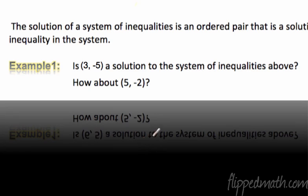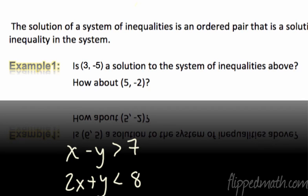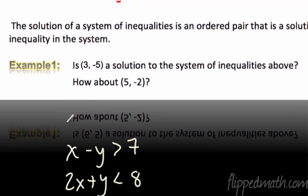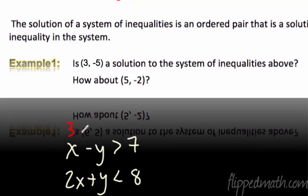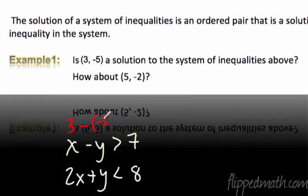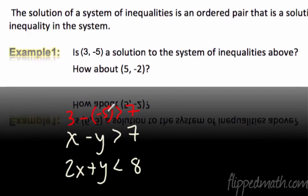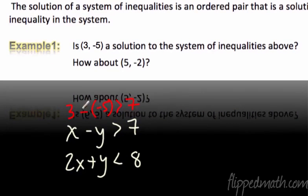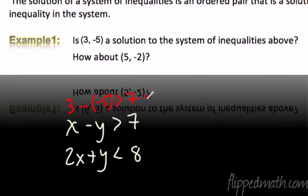Okay, is (3, -5) a solution to the system of inequalities above? All right, so let's try it out. What you have to do is you have to plug in the x to the x and the y to the y. Let me write that inequality out. All right, and we'll write the second one out. 2x plus y is less than 8. All right, we'll change colors here and get going. What about (3, -5)? Is 3 minus negative 5 greater than 7? 3 minus negative 5 is 8, and 8 is greater than 7, so that one checks out.